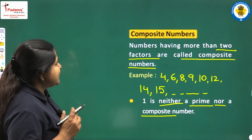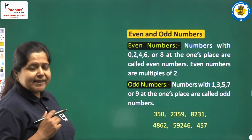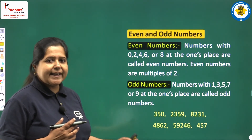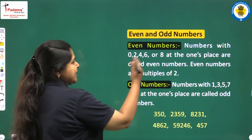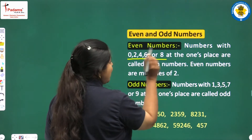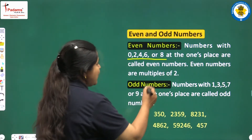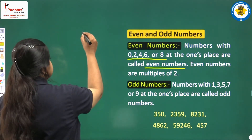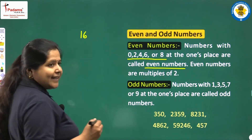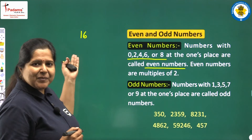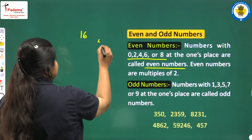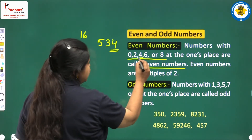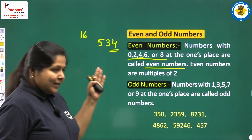Then we look at even and odd numbers. You must have learnt this in your previous class, but let us revise it. Even numbers: numbers with 0, 2, 4, 6, or 8 at the ones place are called even numbers. You can take any number, small or large. Suppose it is 16 — it is ending with 6, so it is an even number. Then again you can take a big number like 534 — it is ending with 4, so it is an even number.